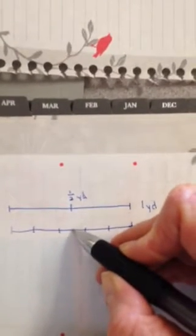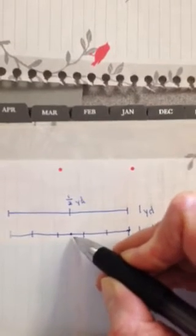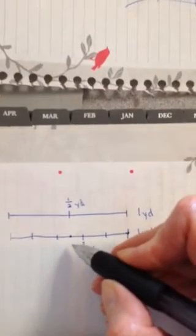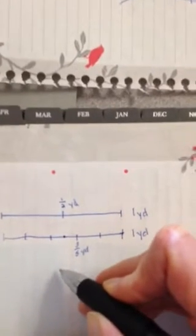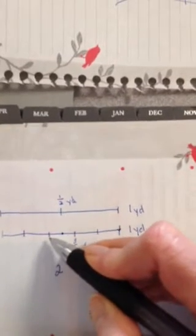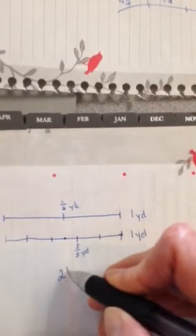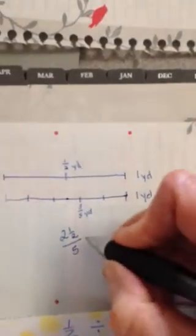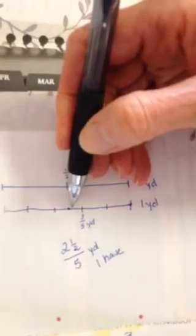How short am I? Here's what I have, but I need this much. How many fifths do I have? I have one fifth, two fifths, and half of this fifth. I have two and a half fifths of a yard. So I'm short one half of a fifth.